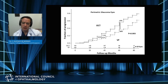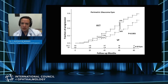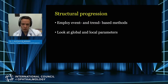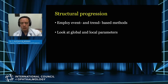When comparing OCT with visual fields, there was significantly earlier detection of progression with OCT in patients with established visual field loss, which was highly important for prognostication. One recommendation for assessing structural progression is to always employ both event-based and trend-based methods — looking at the rate or speed of progression, as well as having a binary definition of progression — both are important for structural assessment in glaucoma with OCT.